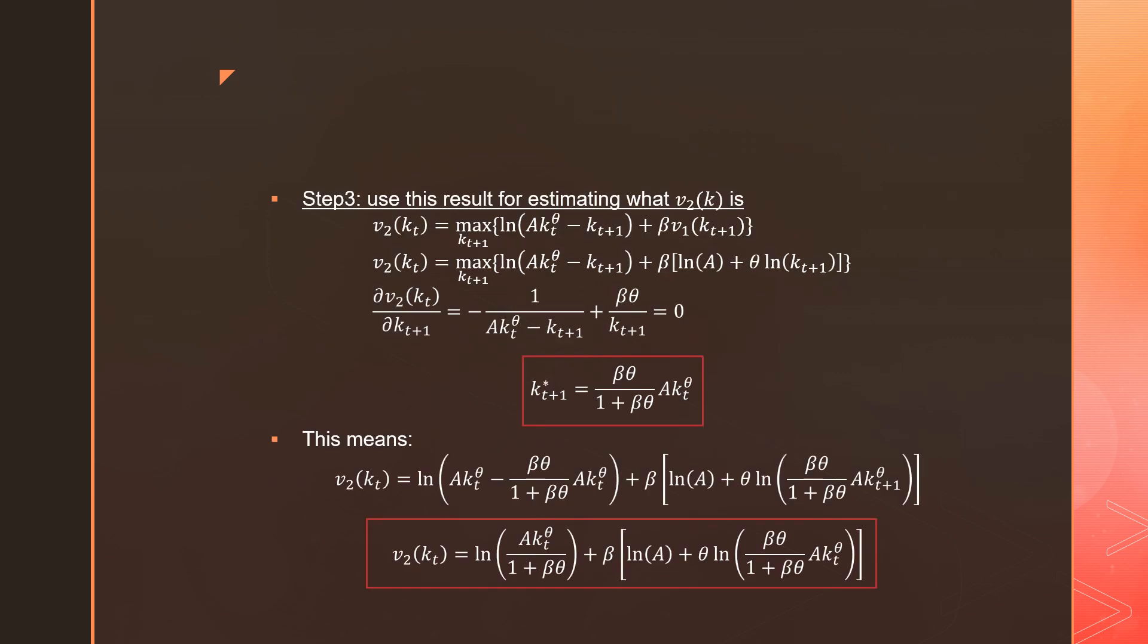Step number three is that we're going to use this result and estimate what v₂(k) is. This is where we get concrete information for the corresponding policy function because we have something to work with now. Following the math through and maximizing this problem by taking the first order condition, we get our optimal kₜ₊₁, which would be our policy function. I'm not putting g(kₜ) here because it's not our final result. It equals βθ/(1+βθ) times our production function.